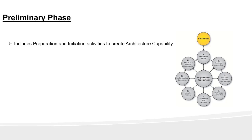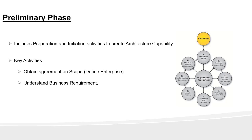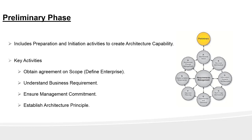Some key activities in this phase: you define the enterprise and obtain agreement on scope. Once you define the enterprise scope, you understand the business requirements and get management commitment for the enterprise architectural task. You also establish architecture principles, which help you make architectural decisions throughout the process. Lastly, you choose and customize the TOGAF framework.